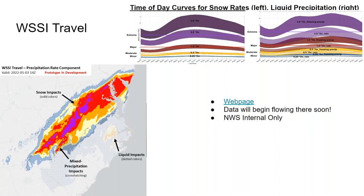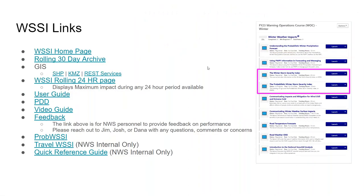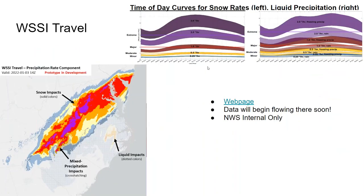We do have the link to the web page. The credentials are the standard winter weather desk credentials to get to that page. We're still working on updates to the algorithms, but the data will be flowing there very soon, keeping the caveat that it is National Weather Service internal for the moment.